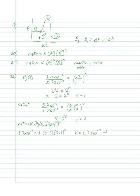For the third-order reaction, K has units of 1 over molarity squared times seconds. The rate always has units of molarity per time. Once you know that, you can figure out the units of K accordingly. I don't test you on those units, but it's good to know.